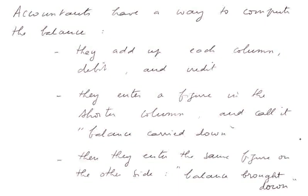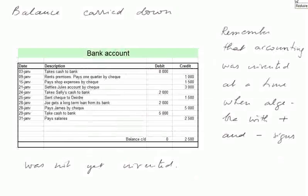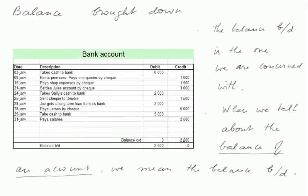Accountants have a way to compute the balance. They add up each column — debit and credit. Then they enter a figure in the shorter column, called the balance carried down. You have to remember that accounting was invented at a time when algebra with plus and minus signs was not yet invented, so there are many ways to compute a difference. This first balance is called the balance carried down.